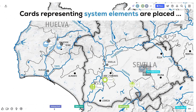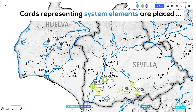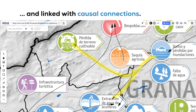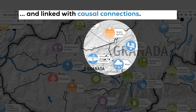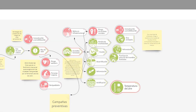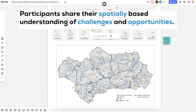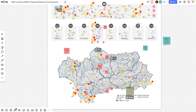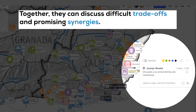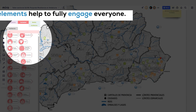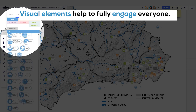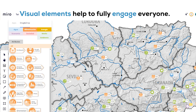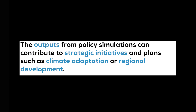Cards representing system elements are placed and linked with causal connections. Participants share their spatially based understanding of challenges and opportunities. Together, they can discuss difficult trade-offs and promising synergies. Visual elements help to fully engage everyone. The outputs from policy simulations can contribute to strategic initiatives and plans, such as climate adaptation or regional development.